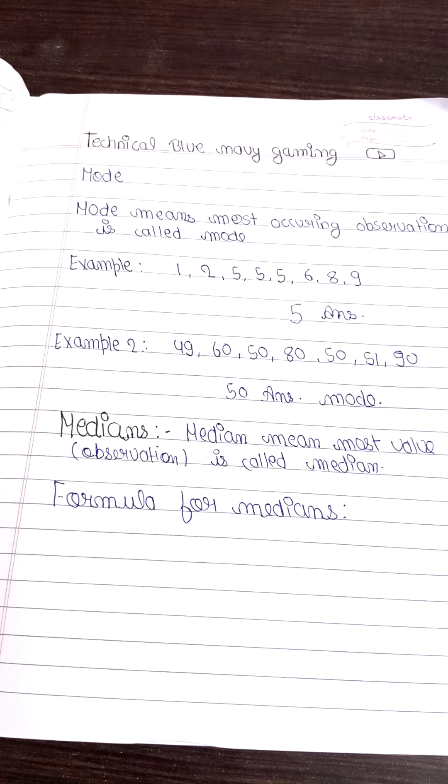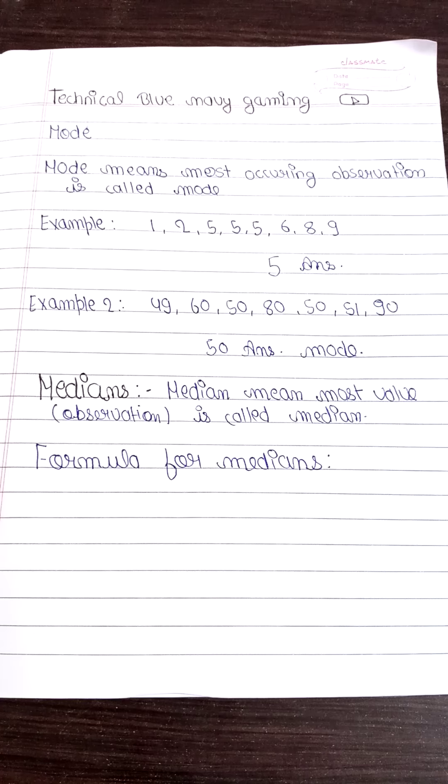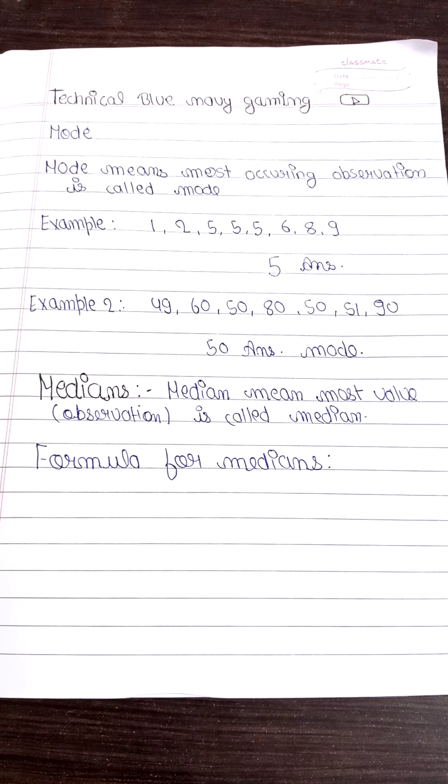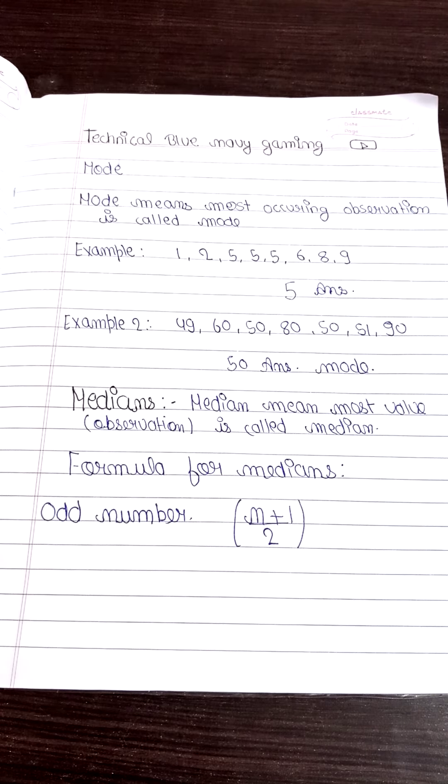So we are discussing about firstly odd number. What is the example of odd number? Let's see. Odd number formula is (n+1)/2 observation. This is the odd number formula.